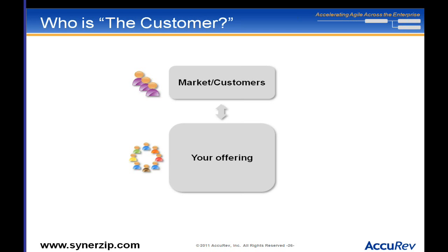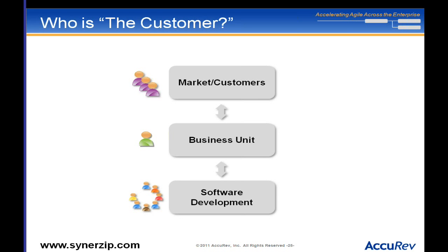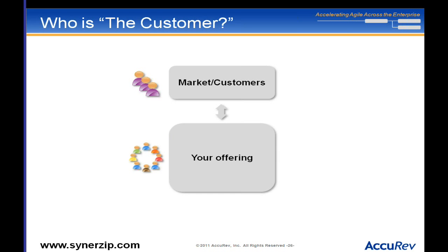To be most effective, especially from an agile perspective, you want to merge those together. You have your offering — whatever the business unit is doing, plus the software development group — merging them together into an offering that provides services to the actual end user, the actual market. That's how you'll be able to focus on increasing your R line, with business and development working hand in hand.